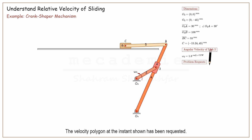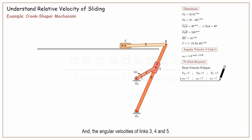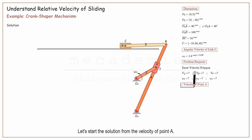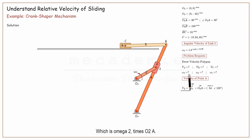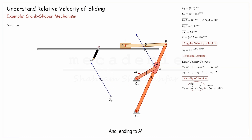The velocity polygon at the instant shown has been requested, and from there we want to find the velocities of points A, B, and C, and the angular velocities of links 3, 4, and 5. Let's start the solution from the velocity of point A, which is omega 2 times O2A and is perpendicular to link 2. We bring it to the diagram starting from the origin OV and ending at A'.